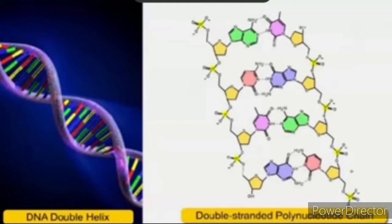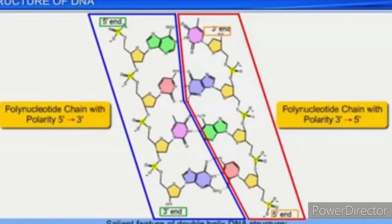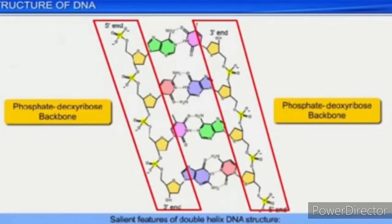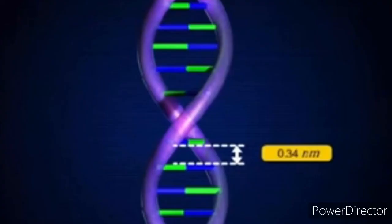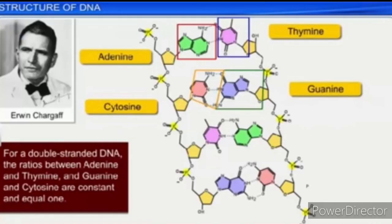To summarize the features: first, DNA is double-stranded; second, it has anti-parallel polarity; third, the backbone is formed by sugar and phosphate; fourth, base pairing between purine and pyrimidine; fifth, complementary base pairing with specific hydrogen bonds; sixth, distance of 3.4 Å between base pairs; and finally, Chargaff's base equivalence rule.